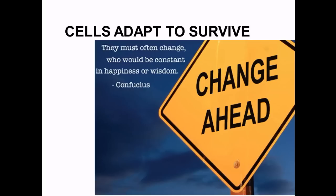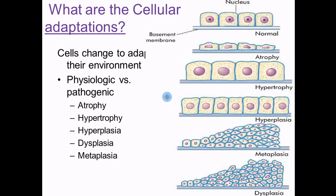Now that we've talked about some cell injuries and what causes damage to the cell, the cell has to adapt to overcome. If it doesn't adapt, it leads to death. A cell is going to fight as long as it can, just like you. There are five basic types of cellular adaptation, and you need to know each type and a good example so that when you're put in a situation, it triggers these memories.